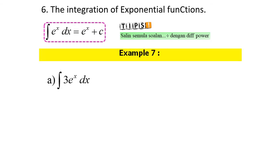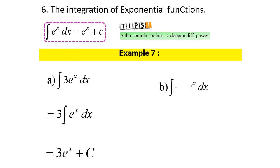Example 7, for part A, when we integrate 3e^x dx, first we factorize 3. And then the integral of e^x dx — we already know that when we integrate e^x dx we will have e^x plus c. So the final answer should be 3e^x plus c.